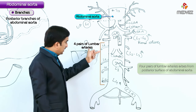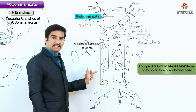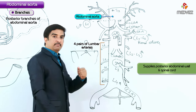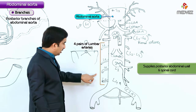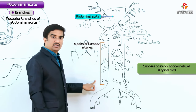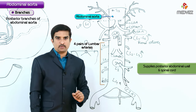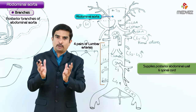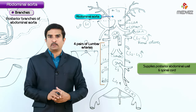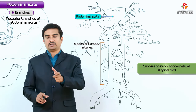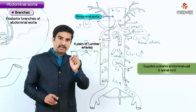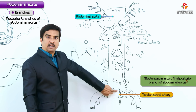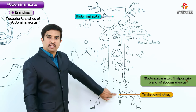There are usually four pairs of lumbar arteries arising from the posterior surface of the abdominal aorta. These lumbar arteries supply the posterior abdominal wall and give off segmental branches that supply the spinal cord.